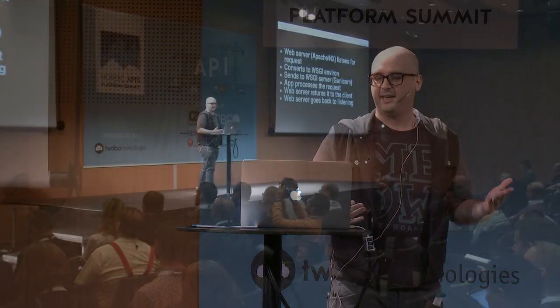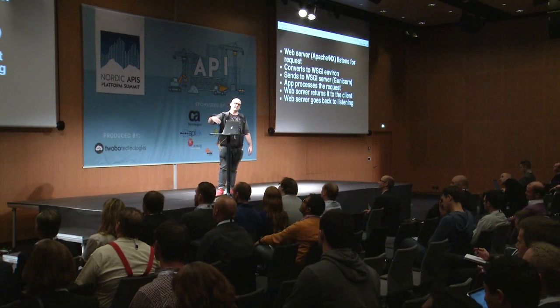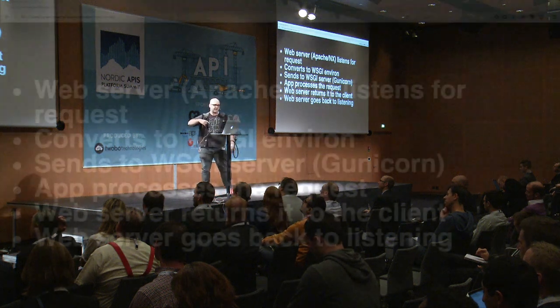Zappa's main advantage as a framework is you can get all the benefits of serverless computing for your existing APIs, assuming you're using Python. With a traditional web server — you all know this already, but as a quick recap — you have a web server, probably Apache or Nginx, listening for events as they come in. That then hands off to your WSGI server, which sends it to your Python application to process the request, then sends it back to the client.